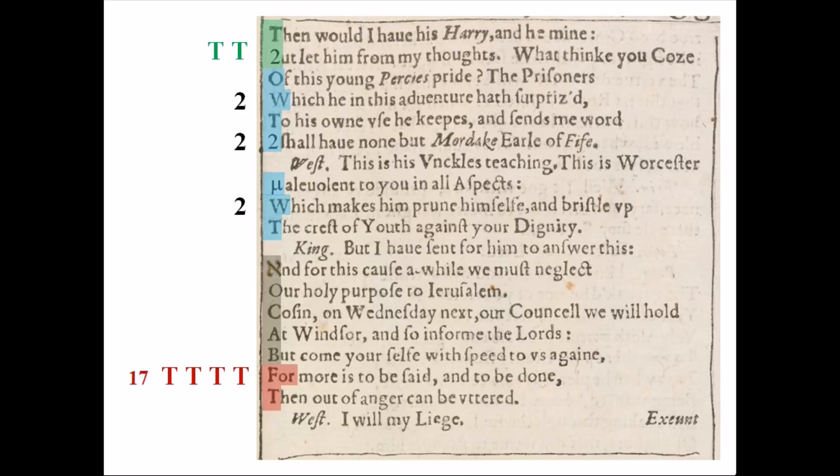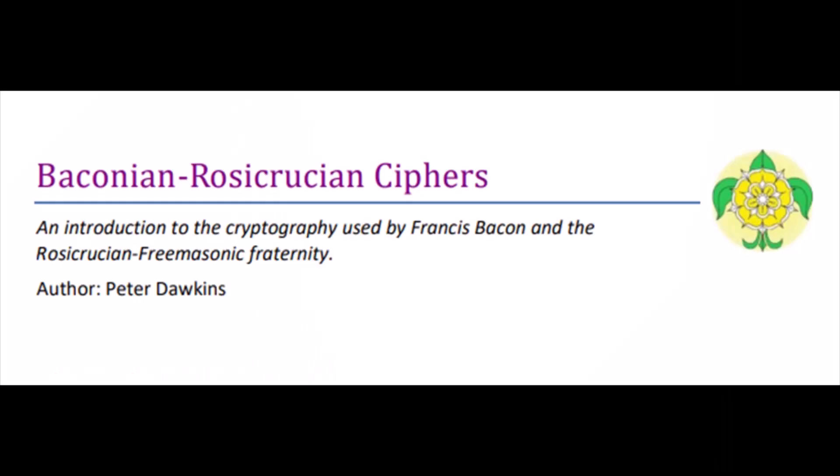Now, if you haven't noticed it yet, beneath the name Bacon is an acrostic spelling 4-T, beginning on line 17. Watching the videos of Alexander Waugh, I learned that 1740 is a number used to indicate Edward de Vere. So we have 2-T and 4-T, and three 2's.